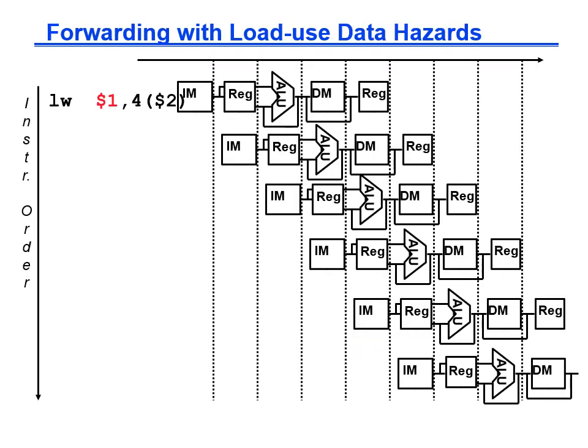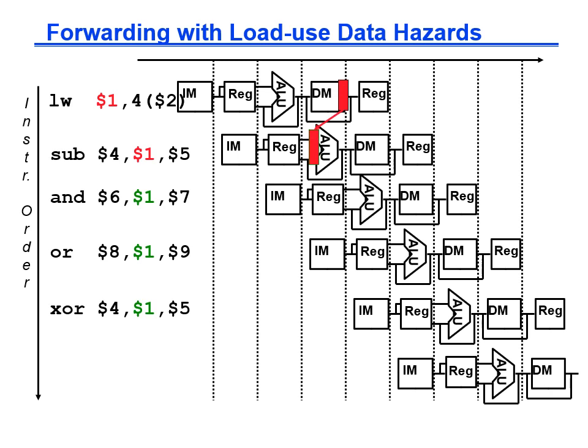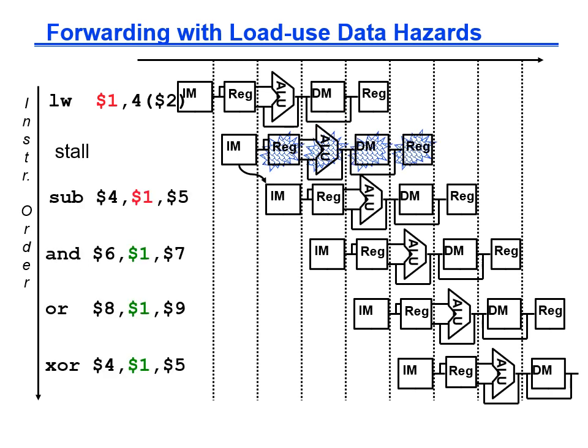The one case where forwarding cannot solve a data hazard is when an instruction reads a register following a load instruction writing the same register. The load-use hazard requires the insertion of one stall to wait for the value to be available from the memory. We have to add the stall between the load and the use so that the forwarded value from the output of the data memory stage to the input of the execute stage is the correct value.